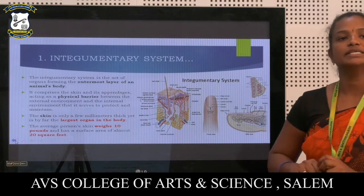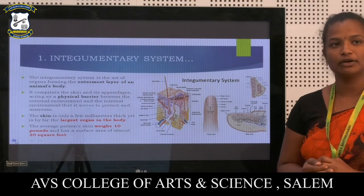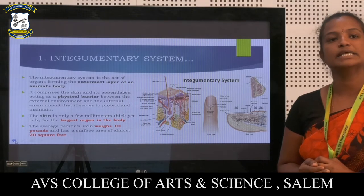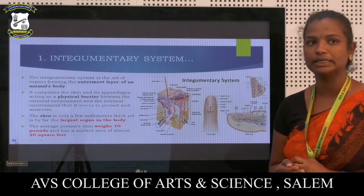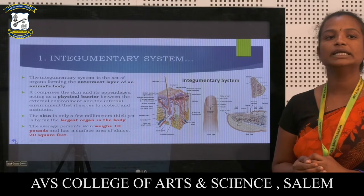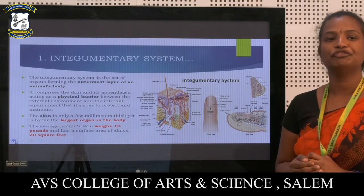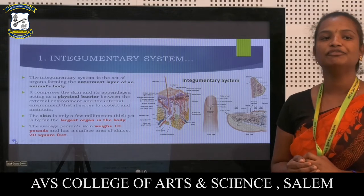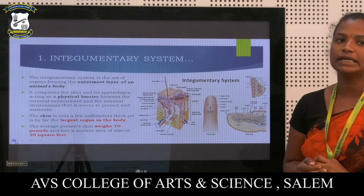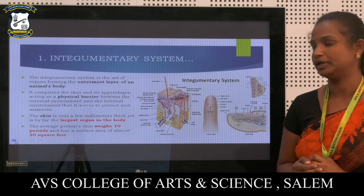The integumentary system is the set of organs forming the outermost layer of an animal's body. It comprises the skin and its appendages, acting as a physical barrier between the external environment and the internal environment that serves to protect the body. The skin is only a few millimeters thick yet is by far the largest organ in the body. The average person's skin weighs 10 pounds and has a surface area of almost 20 square feet.